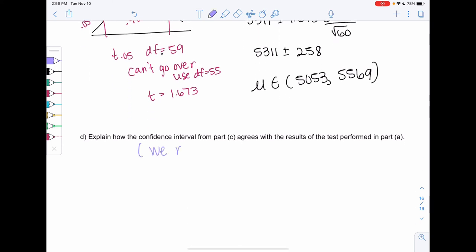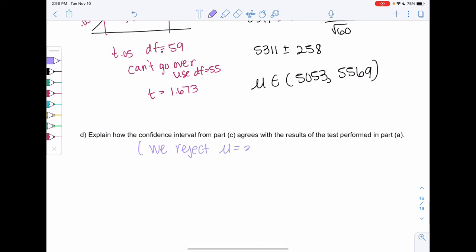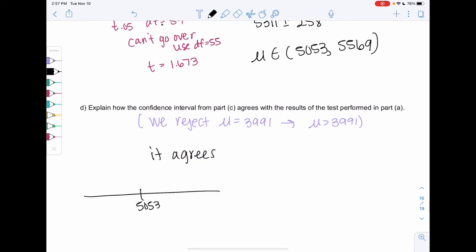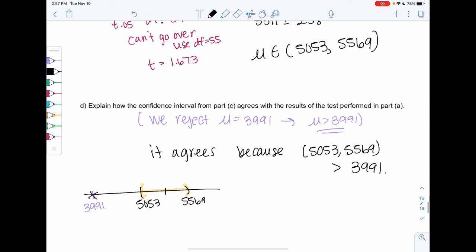In the hypothesis test, we rejected the fact that the mean was 3,991 to prove that it was actually greater than 3,991. The reason it agrees is look at our confidence interval. We're in the 5,000s. 5,053 up to 5,569. These are all my reasonable guesses for the average. The entire interval is way bigger than 3,991. So we're pretty confident. It agrees because my interval is greater than 3,991. So it agrees with rejecting that it equals. It's not even possible to equal 3,991 in this interval. Versus last section, we got a value that was in the interval for not rejecting.